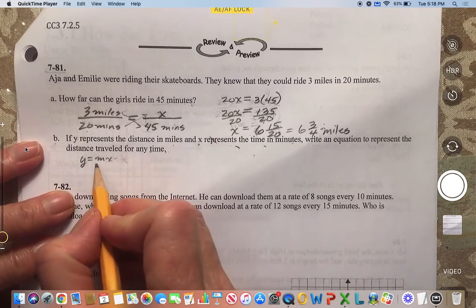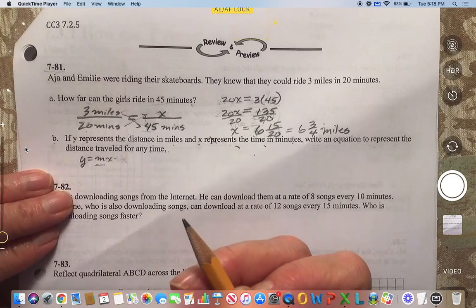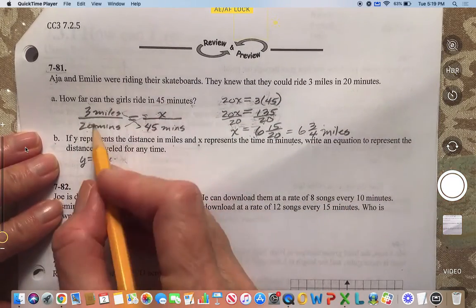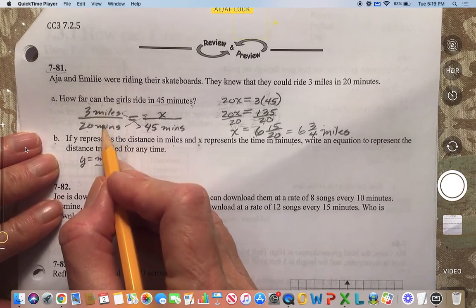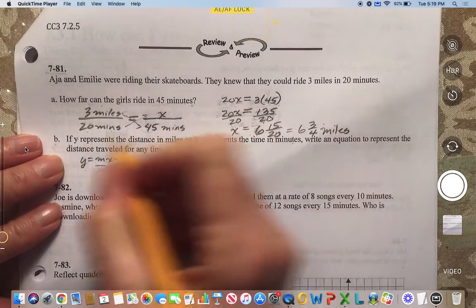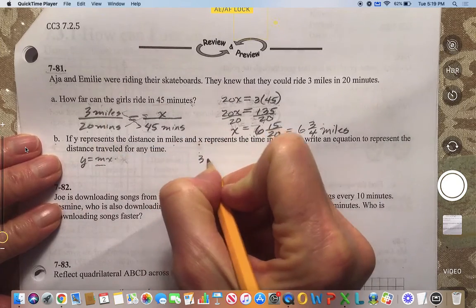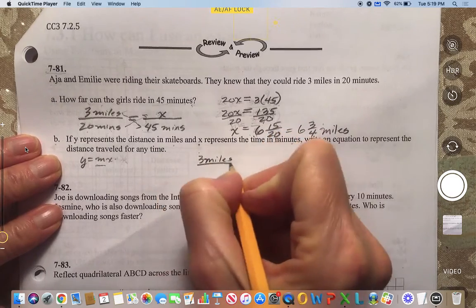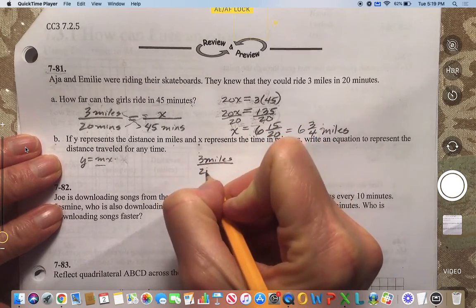So the m is what we're looking for, which is the slope or the rate. And I know I can get a rate for how many minutes. We know we've got three miles per minute, sorry, for every 20 minutes.